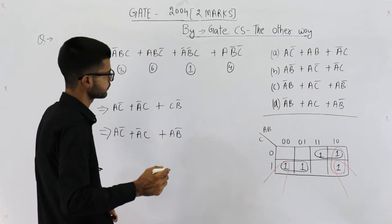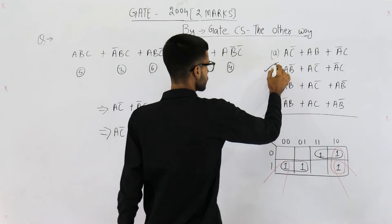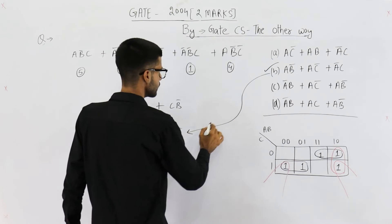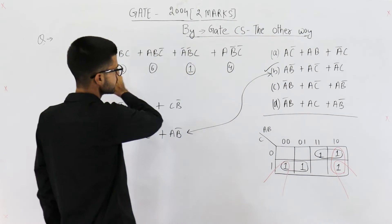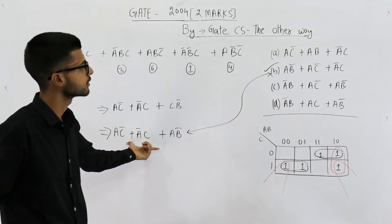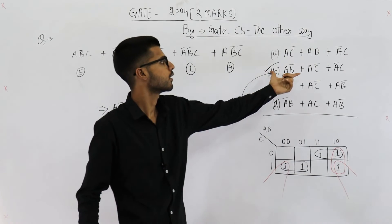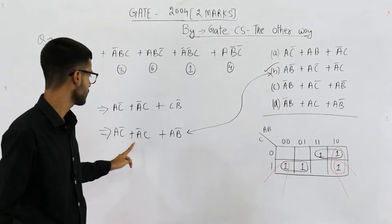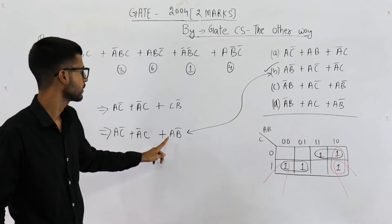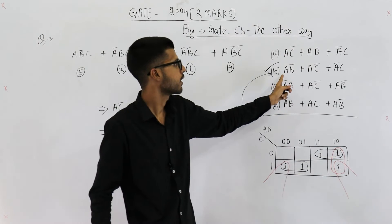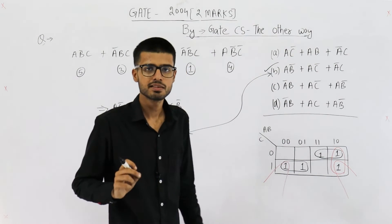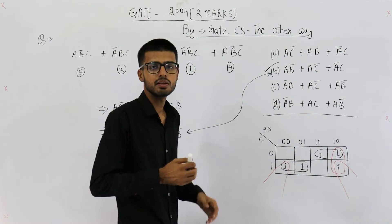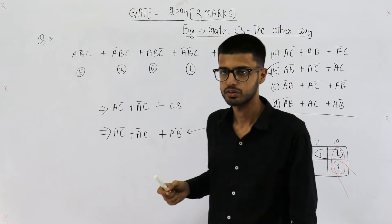Let's find out which expression is present in the options. Option B has to be the answer because we just minimized the expression and got it: A C-bar + A-bar C + A B-bar, and you have A B-bar here. So the answer is option B.